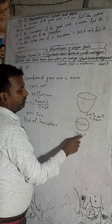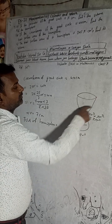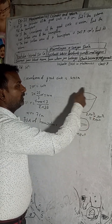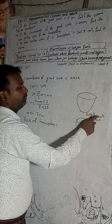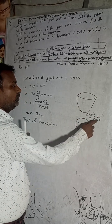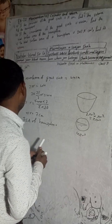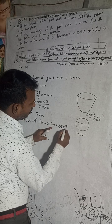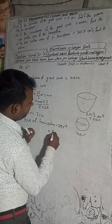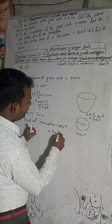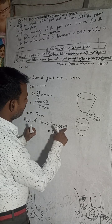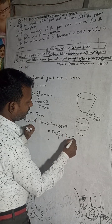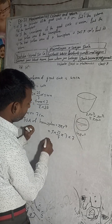The curved surface area of the hemisphere is 2πr² (half of the sphere's 4πr²), and the circular base is πr², so the total surface area formula is 3πr². Substituting: 3 × (22/7) × 7 × 7. The 7 in the denominator cancels with one factor of 7.